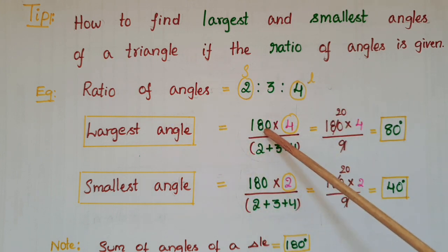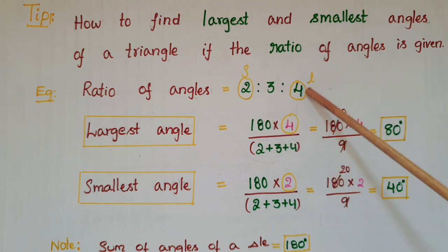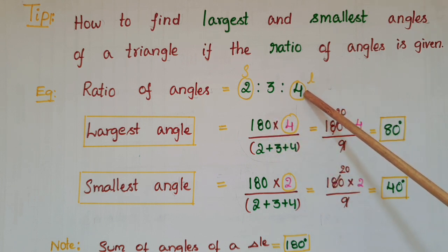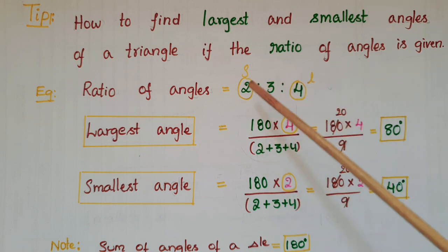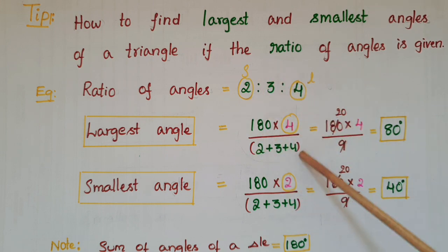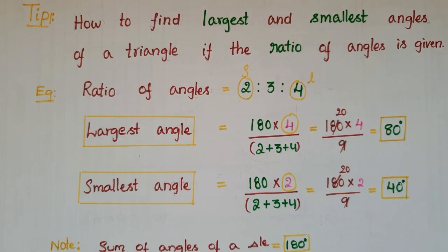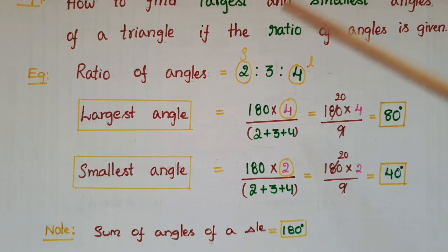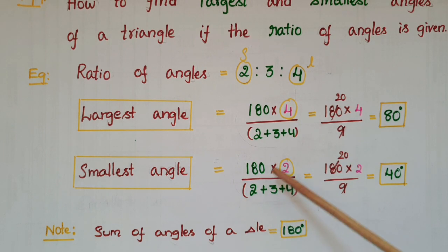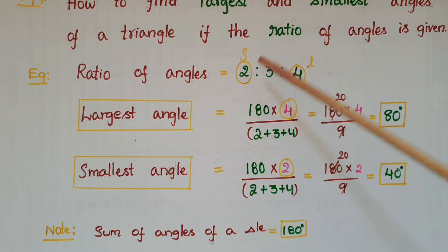The largest angle is equal to 180 degrees — since 180 is the sum of angles of a triangle — multiplied by the largest number, which is 4, divided by the sum of all these numbers: 2 plus 3 plus 4. That is equal to 180 into 4 by 9, which is 80 degrees.